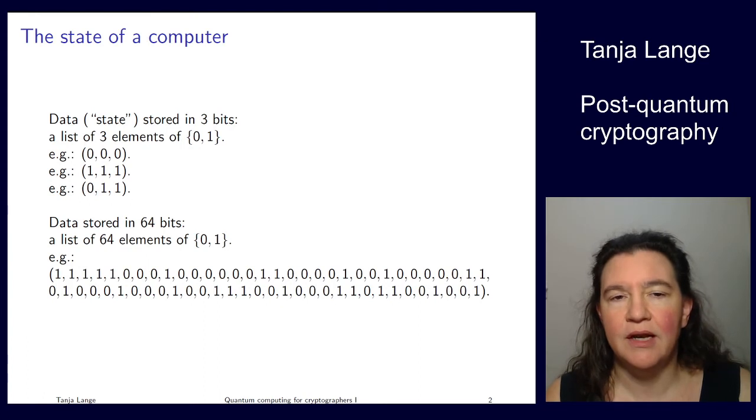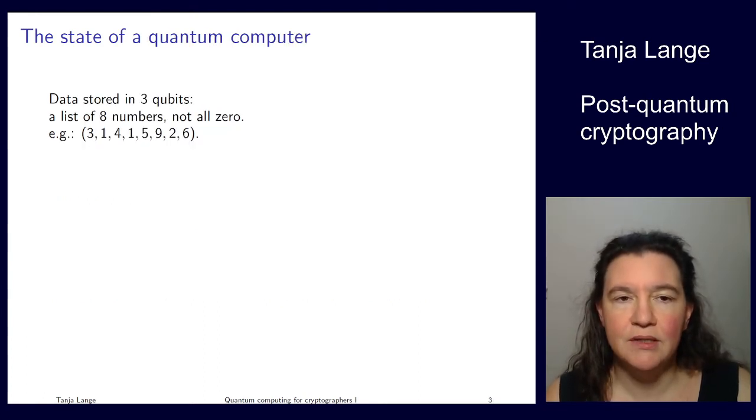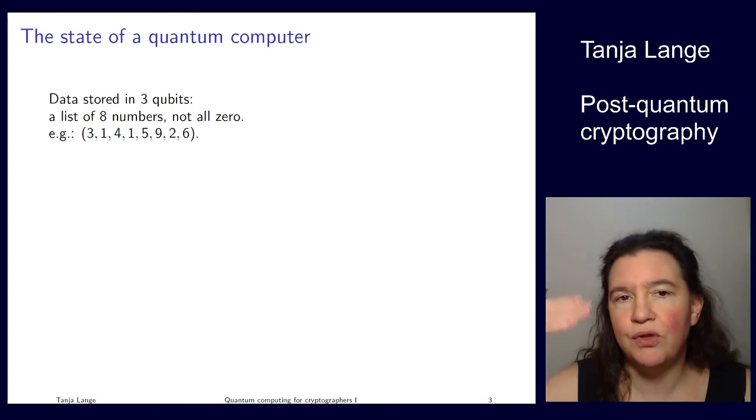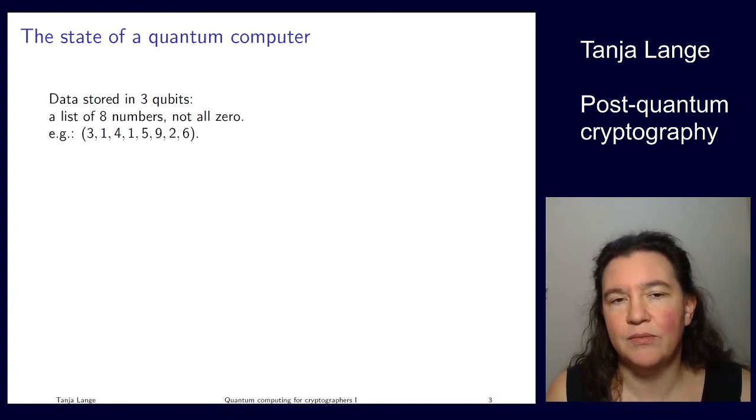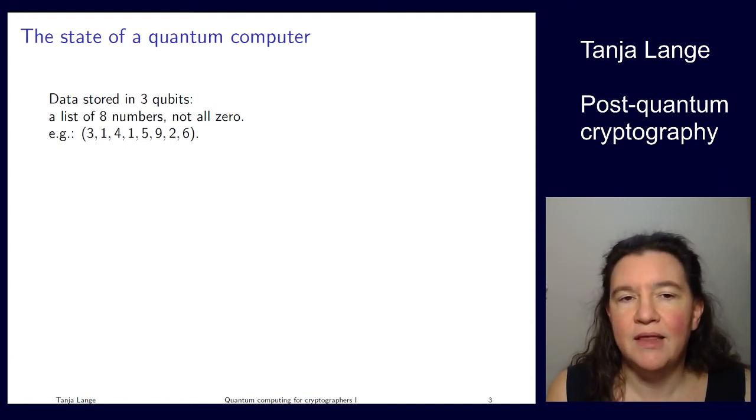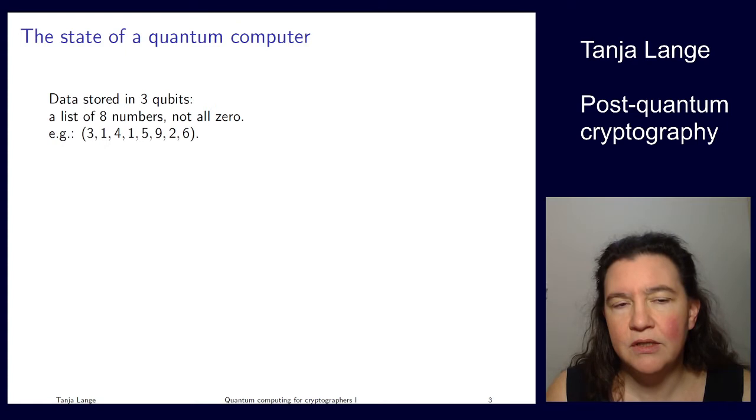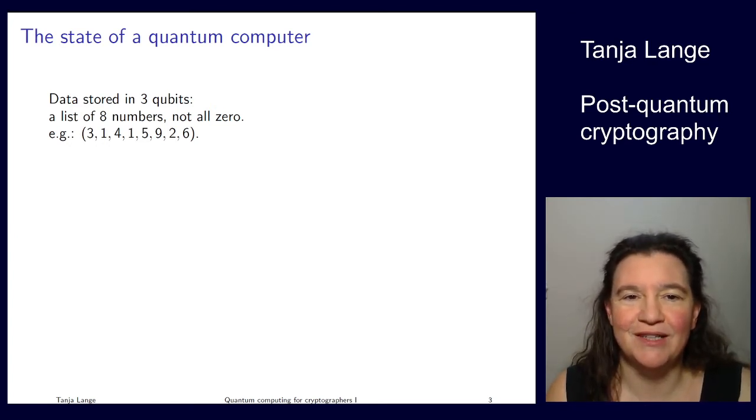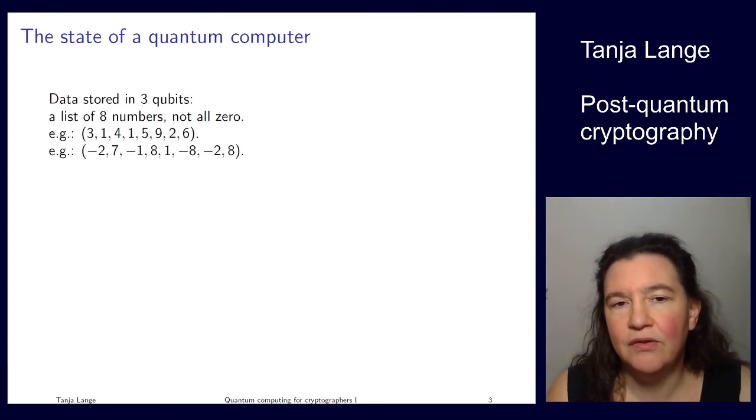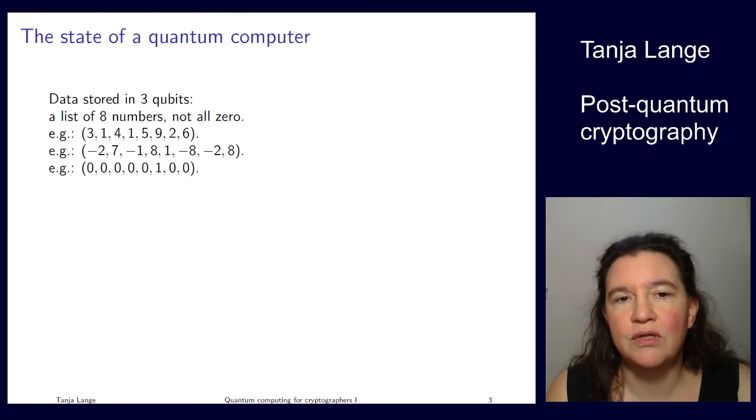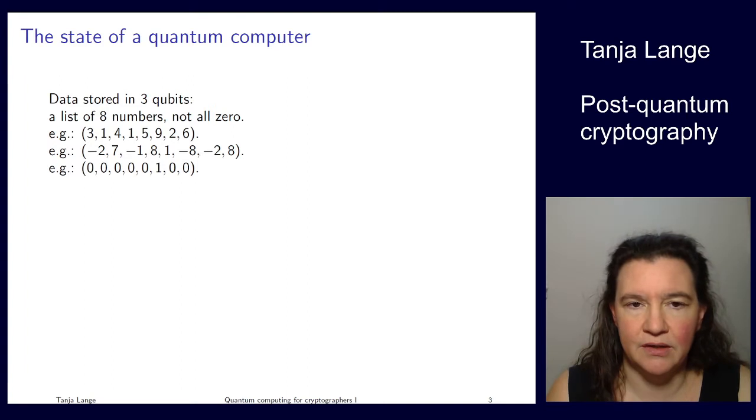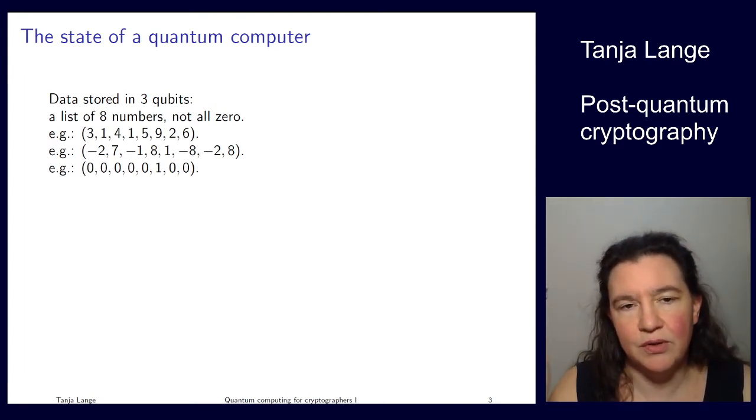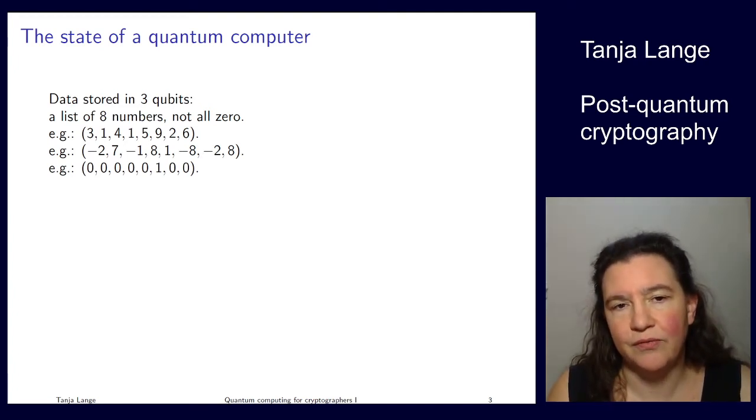Now if you take a quantum computer, then first of all those things are called qubits and no longer bits, and then each qubit stores a number. So in 3 qubits we can store 2 to the 3 different numbers. So the indices are the numbers from 0 to 2 to 3 minus 1. And then each of those values stores a number. So n qubits store 2 to the n numbers. And then there is a requirement that not all of them are 0.